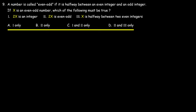Let's look at this problem. An even-odd number is defined as being halfway between an even integer and an odd integer. Given that x is an even-odd number, we need to determine which statement must be true.